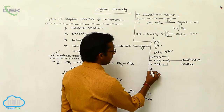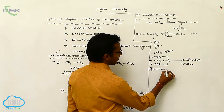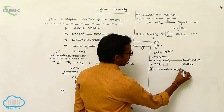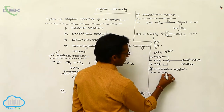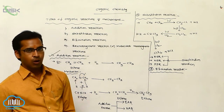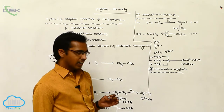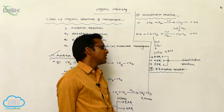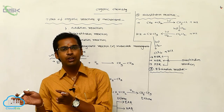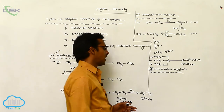The third type is elimination reaction. In an organic reaction, when one or more atoms or groups are eliminated — that is, removed — it is called an elimination reaction.